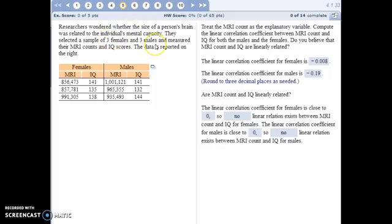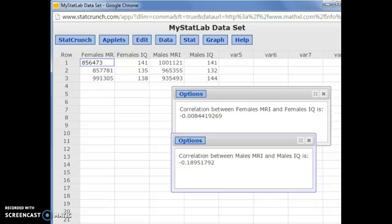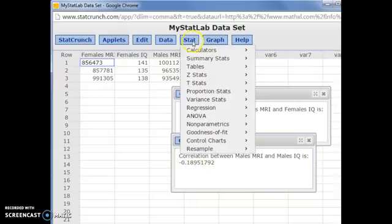For number 5, we're looking to see if a person's brain is related to their mental capacity. So we have some male and female samples. If you jump into StatCrunch, I've calculated the correlation coefficients for the females and for the males.